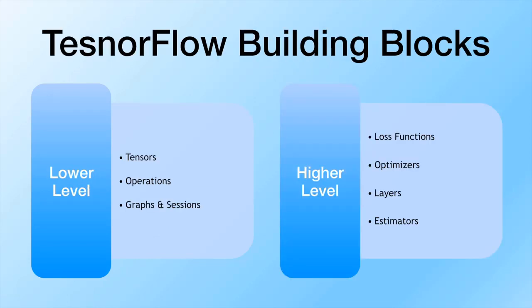We're going to split the main building blocks of TensorFlow into two parts: lower level and higher level. Lower-level components are more basic and tedious to work with, while higher-level components are pre-built functions that make life easier. On the lower level we have tensors, operations, graphs, and sessions. Graphs are all the components of your model written on the back end by TensorFlow, including all connections. Sessions are where your program actually runs.